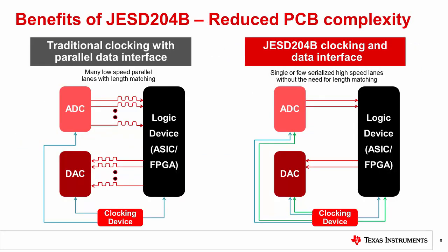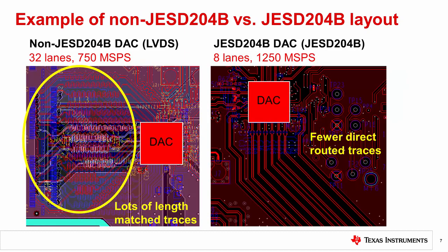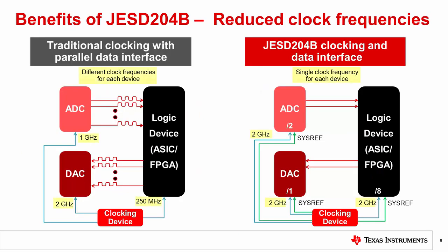One design benefit of a JESD204B system is the reduction of the number of data traces required to carry the converter data. Also, trace length matching of the data traces is not required. Here you can see very clearly the PCB simplification that JESD204B provides. Another JESD204B benefit is that all device clock frequencies may be the same because internal dividers at the receiver will reduce the device clock to the required frequency. This eliminates chances for crosstalk between device clocks at the clocking device and on the PCB. However, some FPGAs may not be able to accept the high clock rates that some converters can, so the clocking IC may still be required to produce a reduced frequency clock.